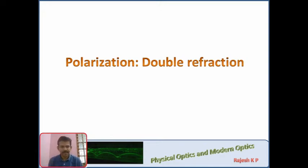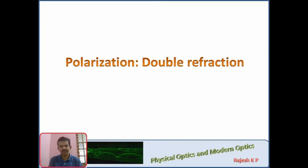Good morning students. In our class, we were discussing polarization. What is polarization? We are comparing mechanical waves. A string and down wave is mechanical oscillations — that is the plane of oscillations. In the light case, it is an electromagnetic wave. Basically, the electric field and magnetic field are in mutually perpendicular directions. In polarization, we will discuss only the direction of the electric field.